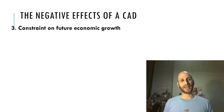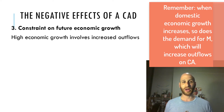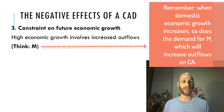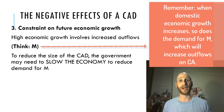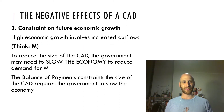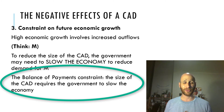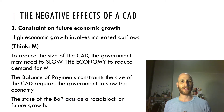The third negative impact is that a CAD can act as a constraint or can slow down future economic growth. High economic growth involves increased financial outflows. Think about the money we are spending on imports — it will increase when the domestic economy grows. To reduce the size of the CAD, the government may need to slow the economy to reduce demand for imports, because imports are an outflow of money. This gives us the concept of the balance of payments constraint, where the size of the CAD requires the government to slow the economy to stop the CAD growing further. The state of the balance of payments — the current account deficit — acts as a roadblock on future growth.